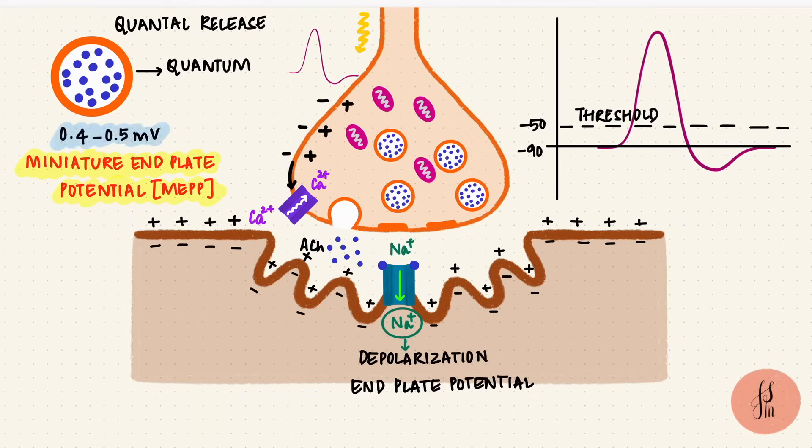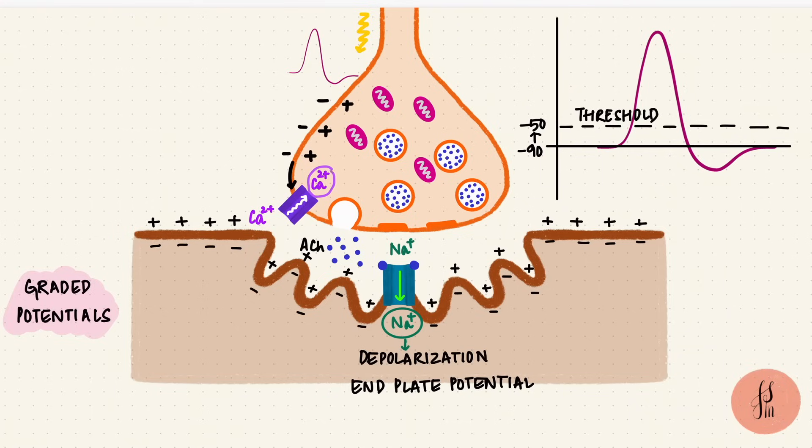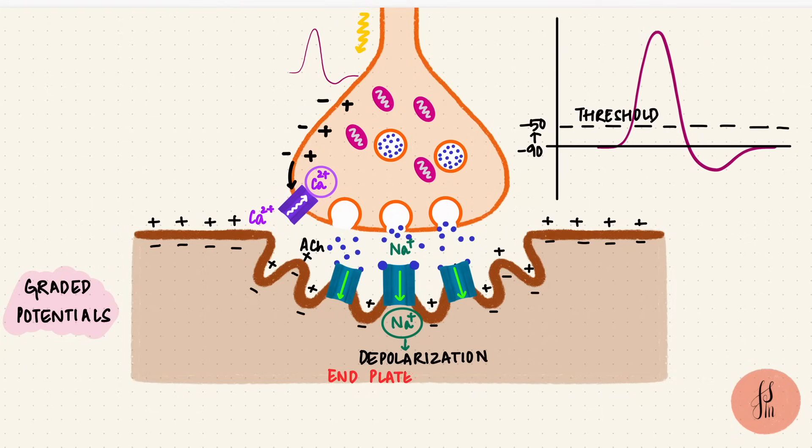That 0.5 millivolts obviously isn't enough to do this, but these are graded potentials so they can summate. Depending on the calcium influx, the vesicles release the neurotransmitter, and lots of vesicles partake, so the potentials summate creating an end plate potential.